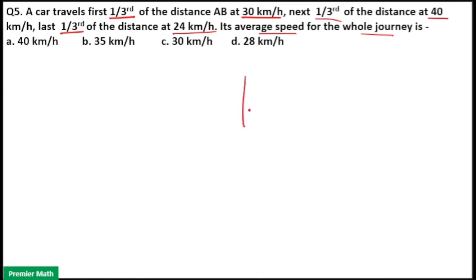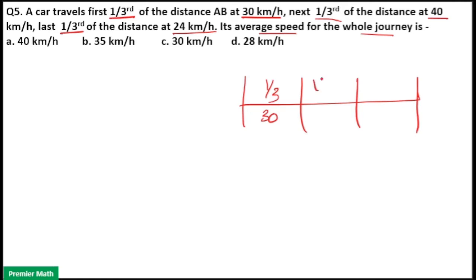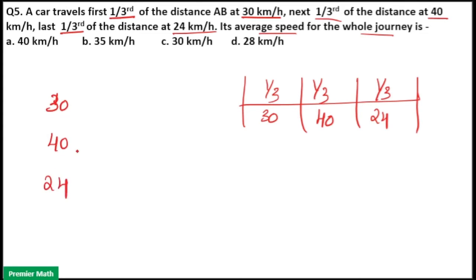The car travels first one third at 30 km per hour, second one third at 40 km per hour, last one third at 24 km per hour. Since the distance is the same in all three cases, take the LCM of 30, 40, and 24. The LCM of 30, 40, and 24 is 120.